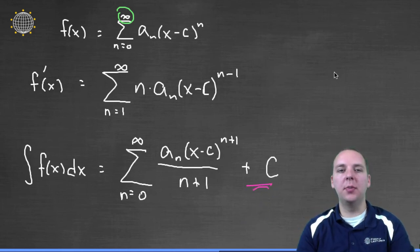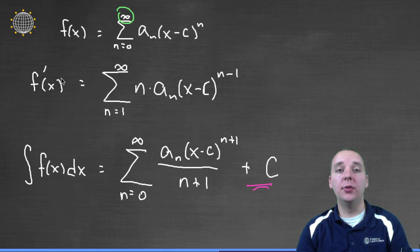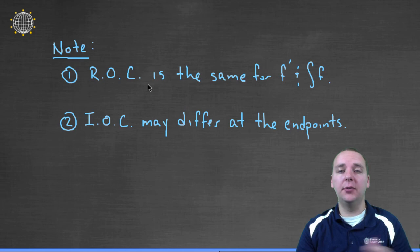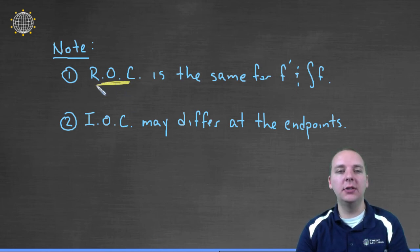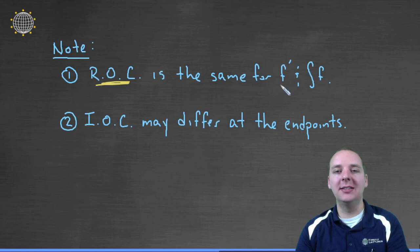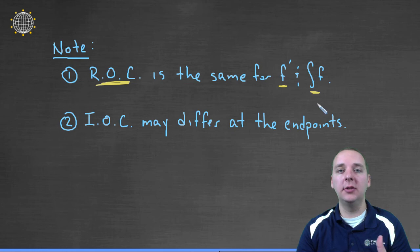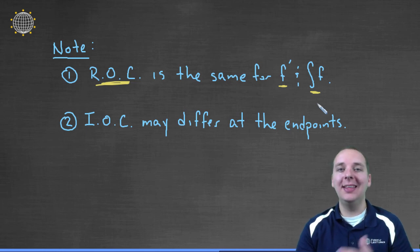The last thing I'll mention is just a couple of quick notes regarding the derivative and the integral of a power series regarding the radius and interval of convergence. How are these affected or are they not affected when we take a derivative or an integral? Well, the good news is that the radius of convergence is not affected. It's the same for the derivative and the integral. So if your original function had a radius of convergence of four, then the derivative and the integral will have a radius of convergence of four.